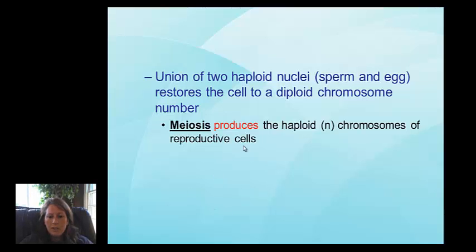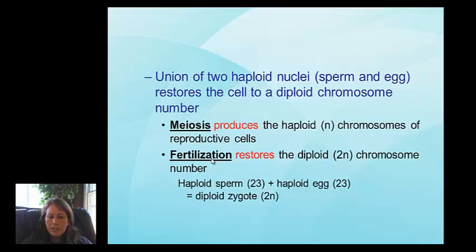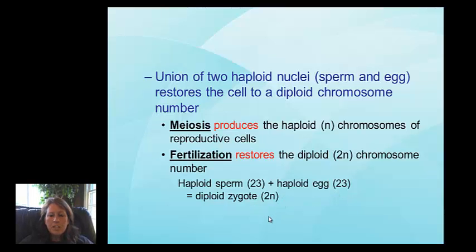For a short answer on this topic, the key terms are: meiosis produces the haploid (n) chromosomes for a reproductive cell — sperm or egg. Through fertilization, the cell is restored to the full diploid (2n) number. Include the terms meiosis, fertilization, produces, and restores, and discuss haploid and diploid: 23 chromosomes each from egg and sperm, restored to 46. Please go back and review your notes — for this quiz you will not have the option to use them.